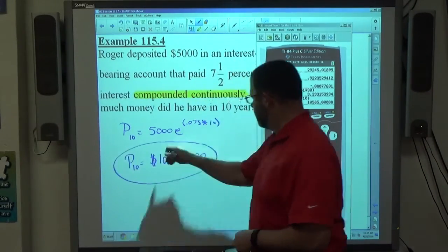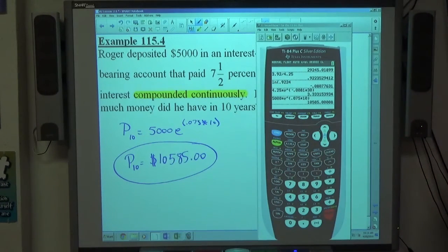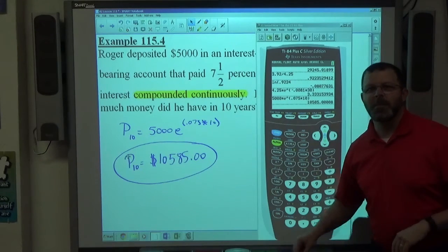Always round money to the nearest cent. Even if it's 0 cents, put 0.00, so I know that you've gone through the trouble of thinking about that.